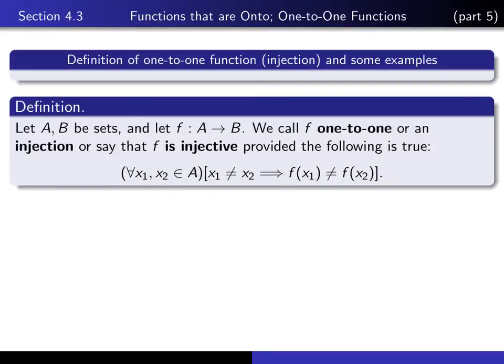Here's our definition of what it means to say that a function is one-to-one. Suppose we have a function from set A to set B. Then we say that f is one-to-one, or we can also say that f is an injection, or we can say that f is injective.